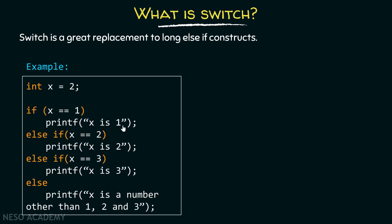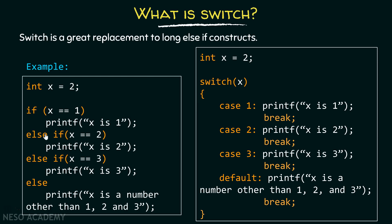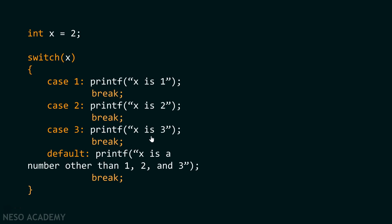What is switch? Switch is a great replacement to long else-if constructs. For example, here you can see an example of a long else-if construct. If x is equal to one, then we print x as one. Else if x is equal to two, we print x as two. Else if x is equal to three, we print x as three. Otherwise, we print x as a number other than one, two, and three. Definitely, writing these else-if constructs many times is quite cumbersome, so here is the good replacement — switch. We can replace all these else-if constructs with one switch construct.